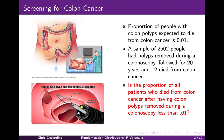A colonoscopy is a screening test for colon cancer, recommended as a routine test for adults over age 45, where the physician — a gastroenterologist — inserts a flexible fiber optic instrument called a colonoscope into the rectum and advances it through the colon, also called the large bowel. A colonoscopy is used to diagnose colon and rectum problems and to perform biopsies and remove colon polyps, a small clump of cells that form on the lining of the colon that are typically not cancerous. The proportion of people with colon polyps expected to die from colon cancer is 0.01.